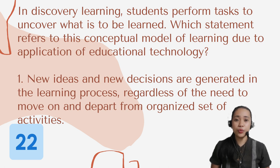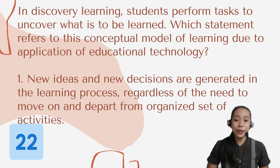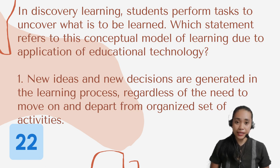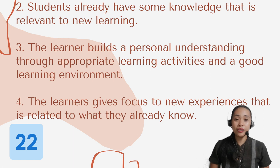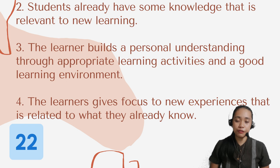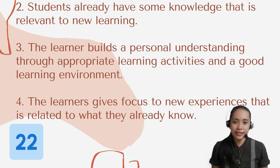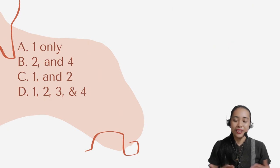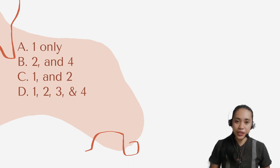Question number 22. In discovery learning, students perform tasks to uncover what is to be learned. Which statement refers to this conceptual model of learning due to the application of educational technology? Number 1: New ideas and new decisions are generated in the learning process regardless of the need to move on and depart from an organized set of activities. Number 2: Students already have some knowledge that is relevant to new learning. Number 3: The learner builds a personal understanding through appropriate learning activities and a good learning environment. Number 4: The learner gives focus to new experiences related to what they already know. Choices: A: One only. B: Two and four. C: One and two. D: One, two, three, and four.